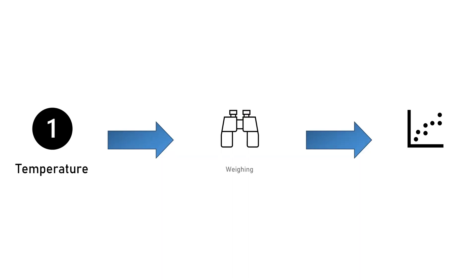Picture this: you're a chemist and you want to increase the yield of a chemical reaction. One way to do that is you could play around with the temperature, and maybe you find an optimum — that could be at 180 degrees, for example.